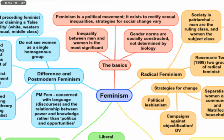Feminists also claim that gender norms are socially constructed and not determined by biology. If they are not determined by biology and they are socially constructed, then it means that those norms can be changed. What do we mean by socially constructed? It means that as a result of the interaction between different people in society, the perception of gender inequality comes into being and gets reinforced from time to time. The more we interact, the more that perception gets reinforced.